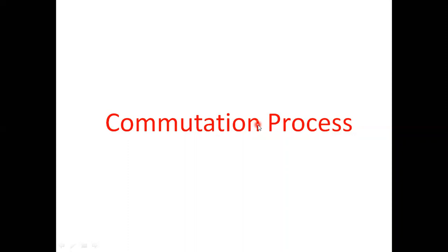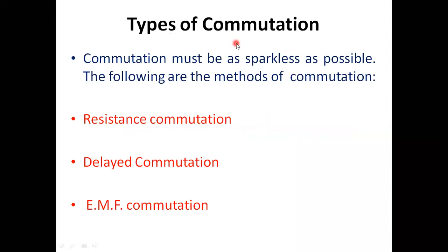In this video we will discuss the commutation process. Commutation is the reversal of current in the armature coil when it passes the brush. The brush makes the coil short-circuited, and during this process the current flow in that particular coil is reversed. We will discuss different types of commutation. Our aim is to improve the commutation process so that there is no sparking and no damage to the brush or commutator segments.